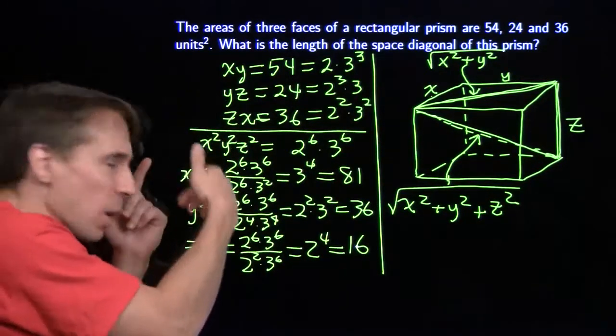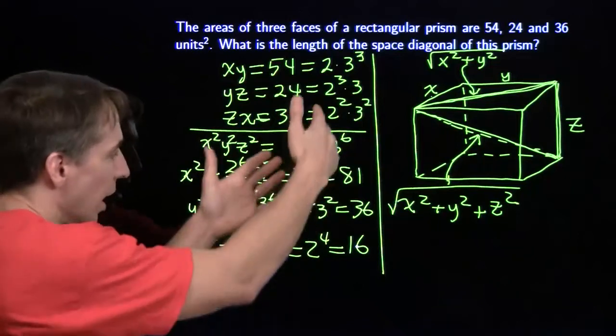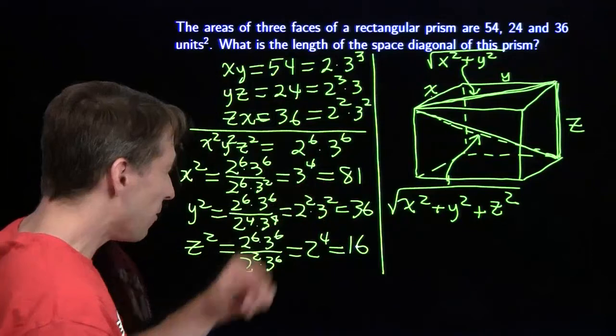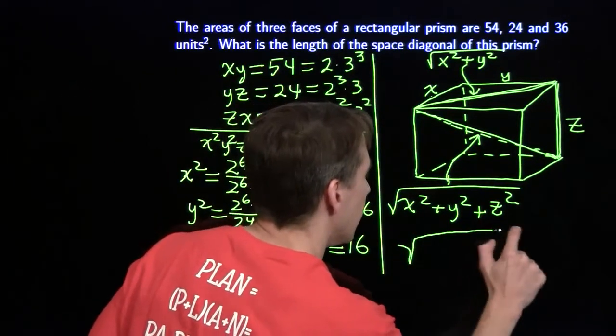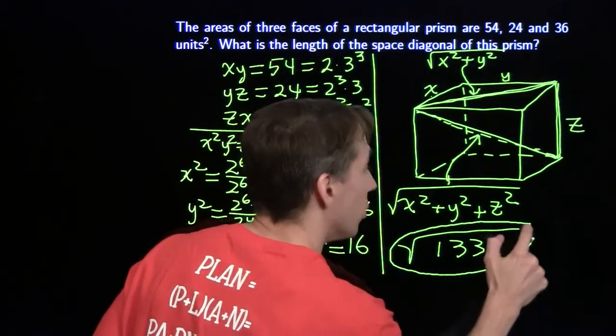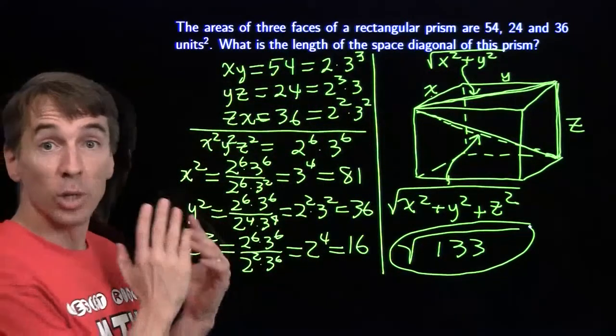So now I've got my x squared, I've got my y squared, I've got my z squared. And I just add them up. 36 and 16 gives me 52. Add the 52 to the 81, I've got 133. So my answer is the square root of 133. And that is how we exploit symmetry.